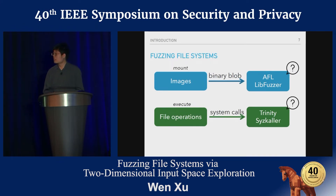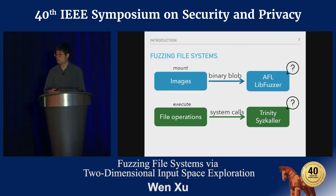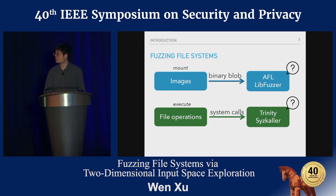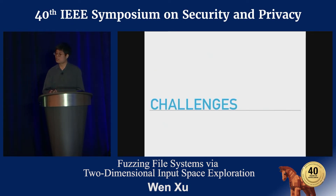Is it easy to fuzz file systems by directly applying existing fuzzing techniques? The answer is no. We can fuzz images to be mounted — there are already fuzzers like AFL or libFuzzer which can fuzz binary blobs efficiently. And for fuzzing operations, there is a list of system calls we can fuzz using syzkaller or trinity. But directly applying these fuzzers to file systems is not effective.